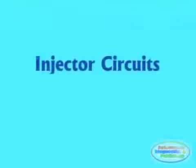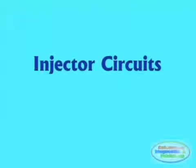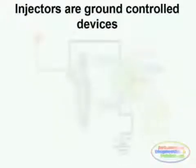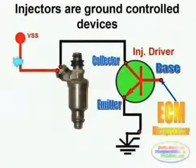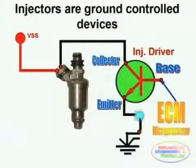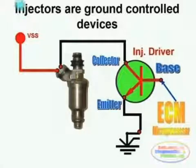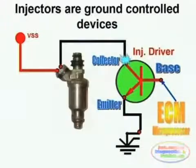Injectors are solenoid type components which are in charge of delivering the right amount of fuel to the engine. Injectors are for the most part negatively controlled. This means that one side of the injector is going to be connected directly to the voltage supply line, while the other side is going to be pulse triggered in order to achieve the actual fuel flow. The ECM microprocessor applies a very small pulse to the transistor driver circuit.